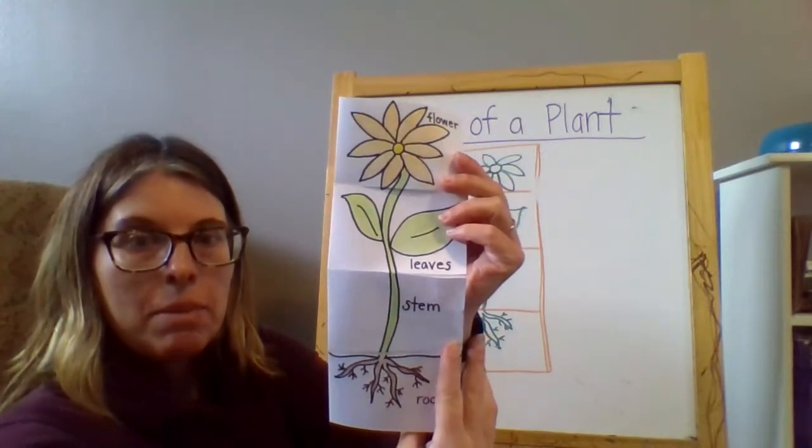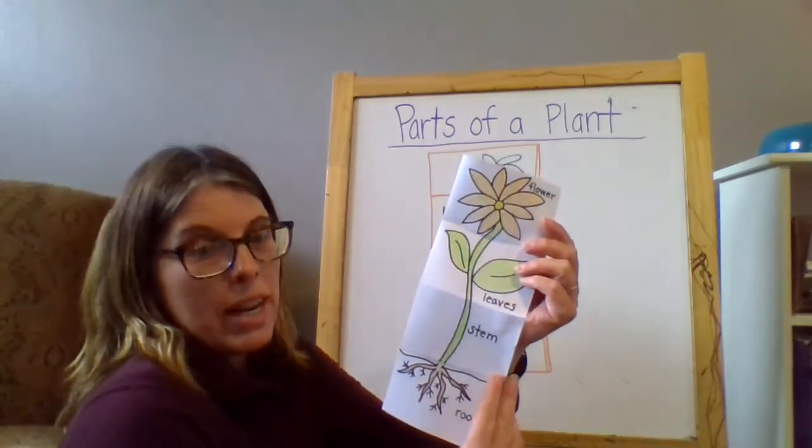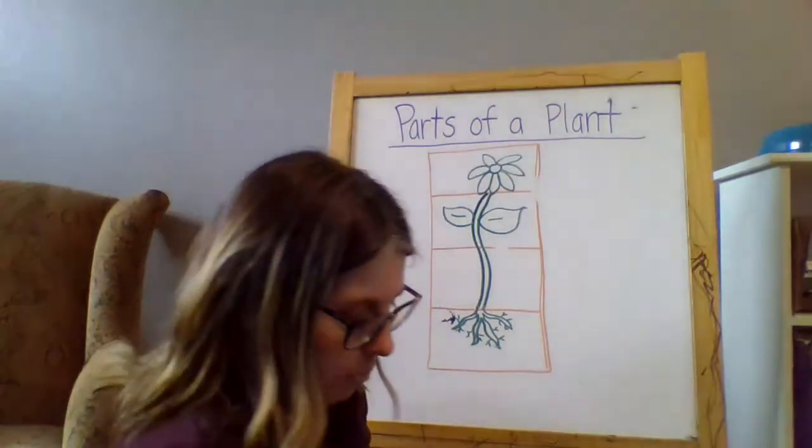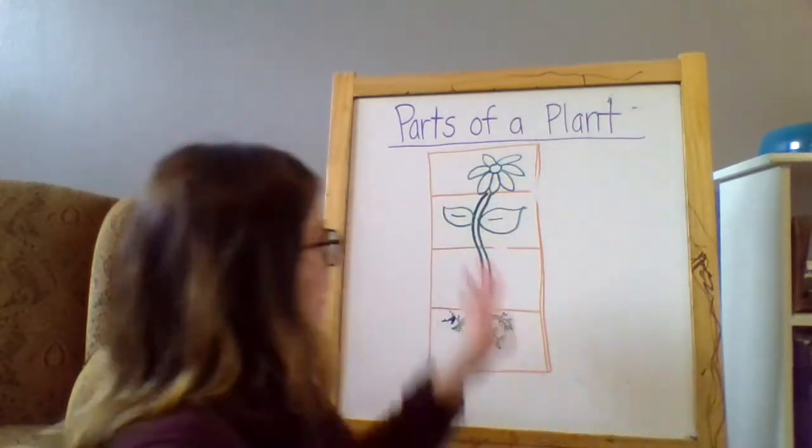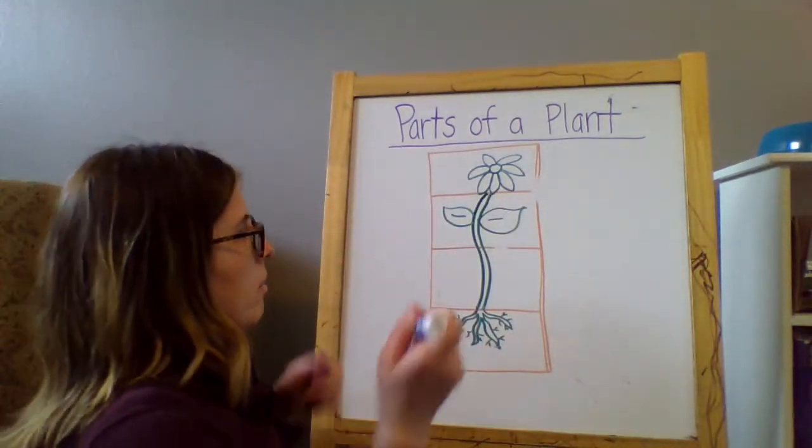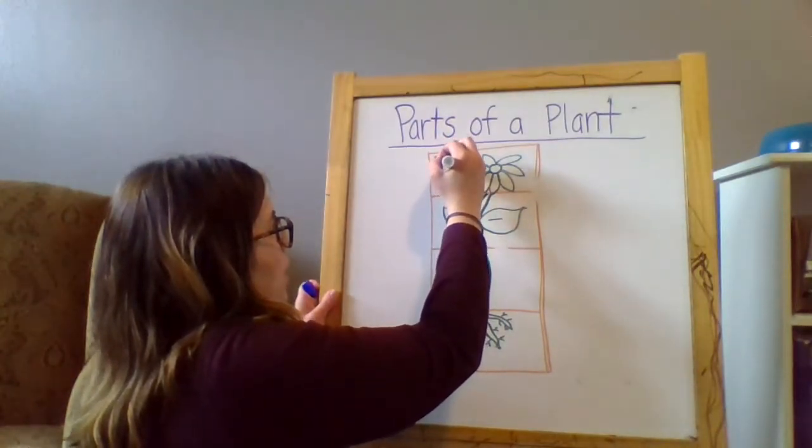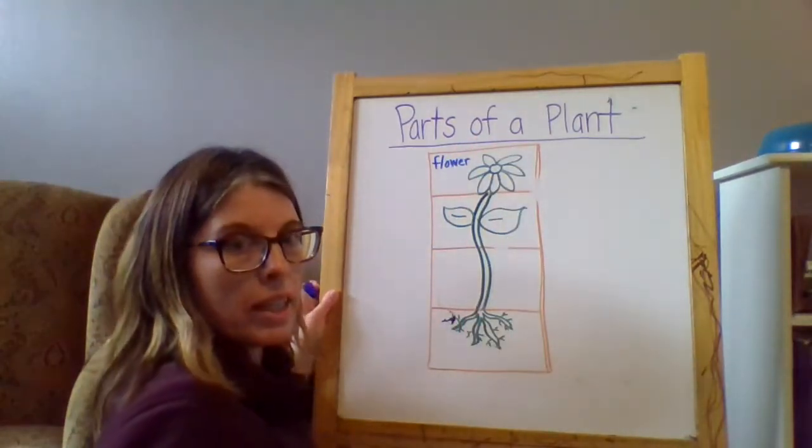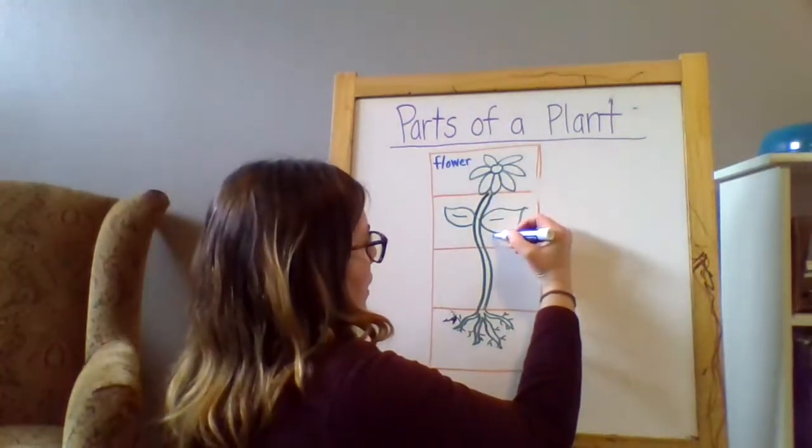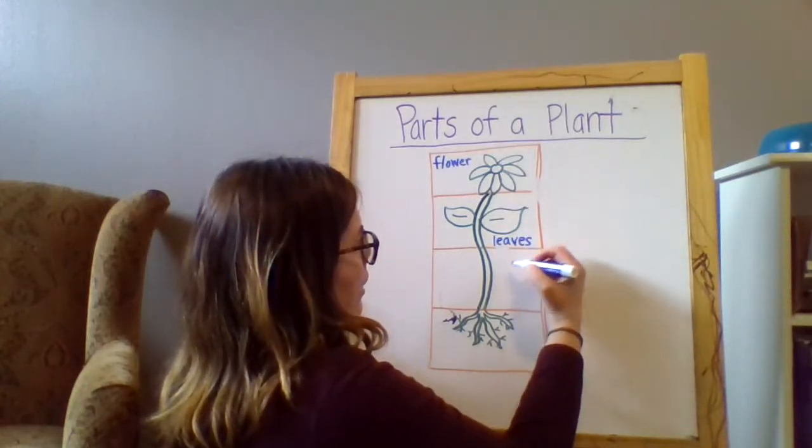Is that I outlined mine in black. And then I colored it in with a crayon. But if you want to use marker, you can use marker. Decide how you'd like to do that. And then the final step is that we want to label these. So this one's going to be flower. It starts with an F. These are leaves. L-E-A-V-E-S.